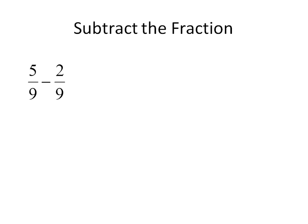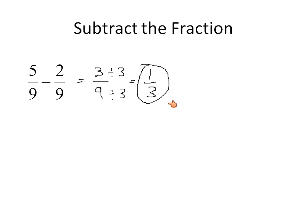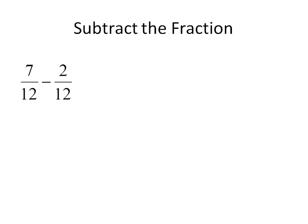Let's do some subtracting. 5 minus 2 is 3 over 9. We reduce that to lowest terms by dividing by our greatest common factor of 3: 3 divided by 3 is 1, and 9 divided by 3 is 3. Our final answer is 1 third. You subtract the numerators only — 5 minus 2 is 3 — then simplify by dividing by the greatest common factor of 3.